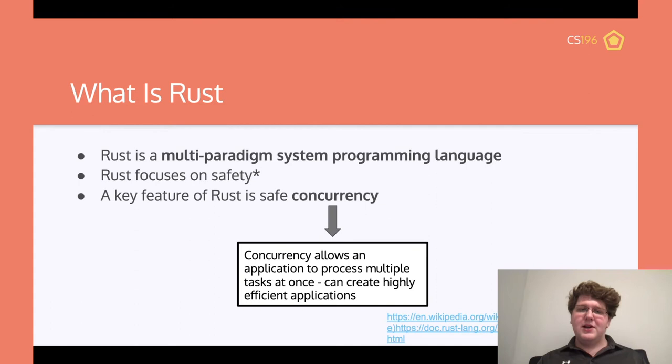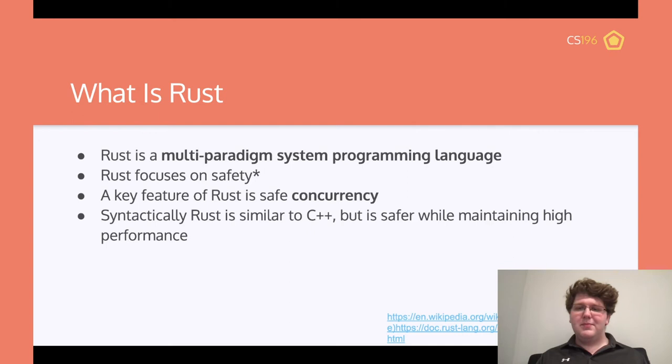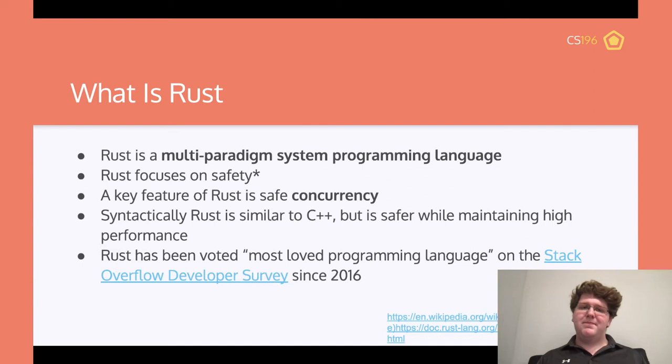A key feature of Rust is that it makes concurrency safe. Concurrency allows an application to process multiple tasks at once and create highly efficient applications — instead of doing one thing, you can have your computer do two or however many things you want. Safe concurrency means it's easy to do without a lot of issues. Syntactically, Rust is pretty similar to C++, but it's safer because it has a lot of safety checks that C++ does not.